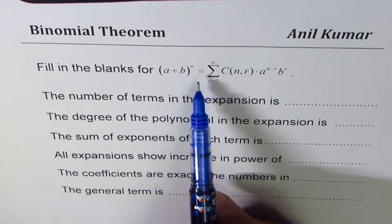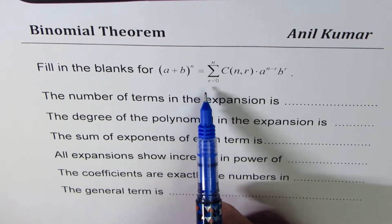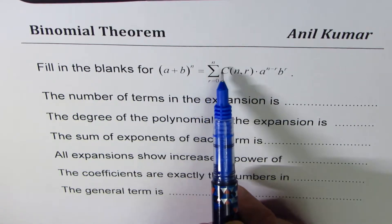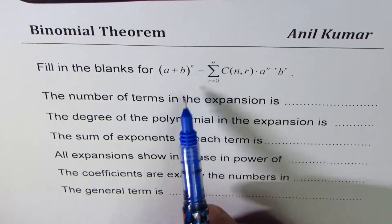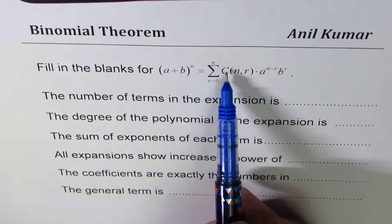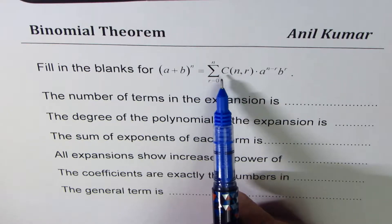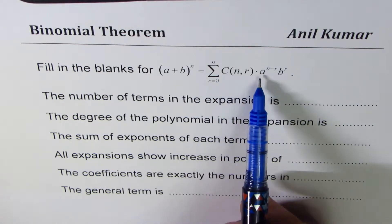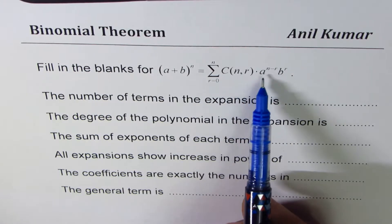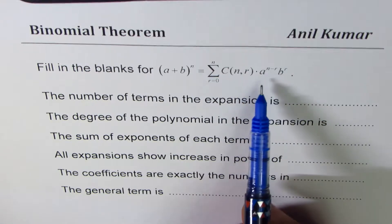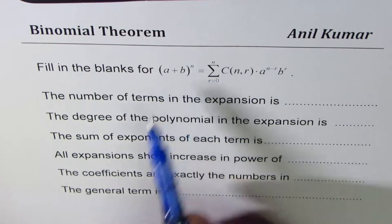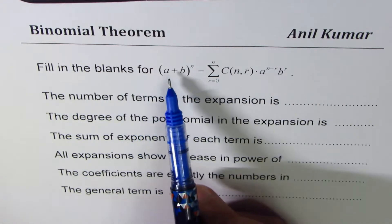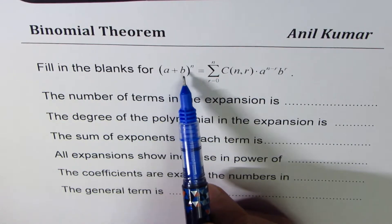Fill in the blanks: (a + b) to the power of n, which could be written as the sum for r equals 0 to n of nCr times a to the power of n minus r times b to the power of r. That's the expansion of (a + b) to the power of n.